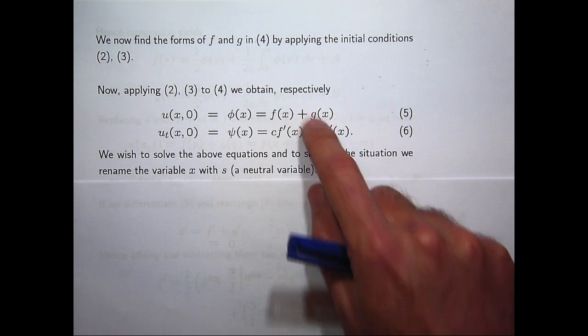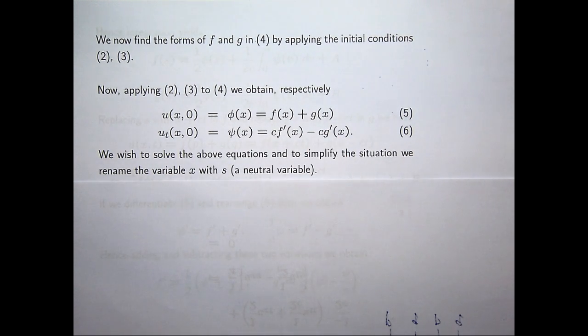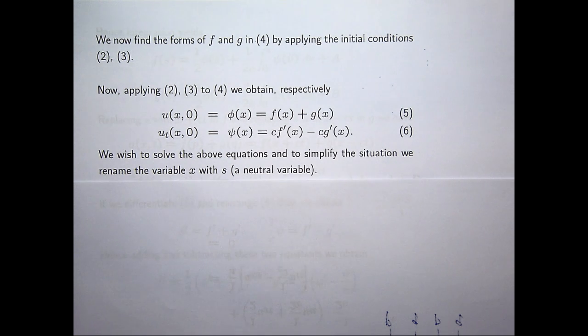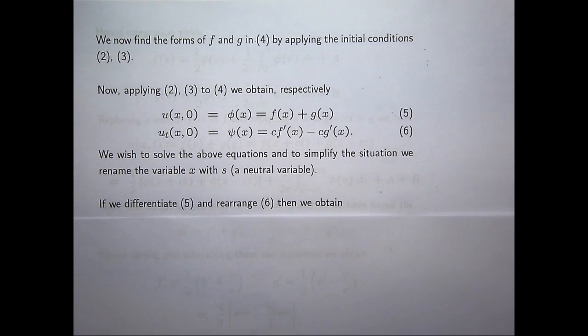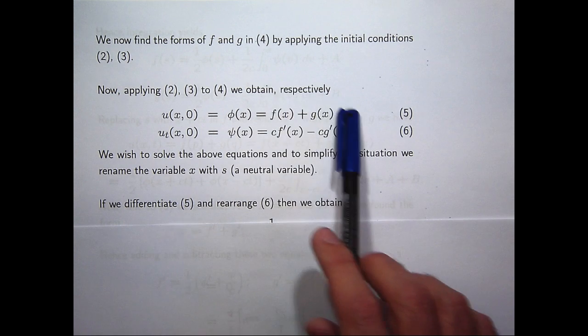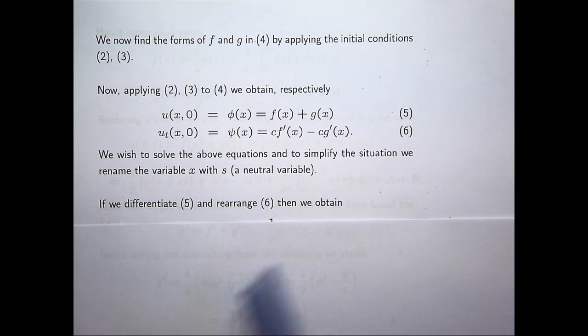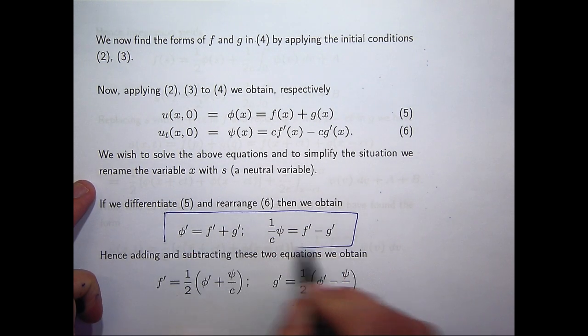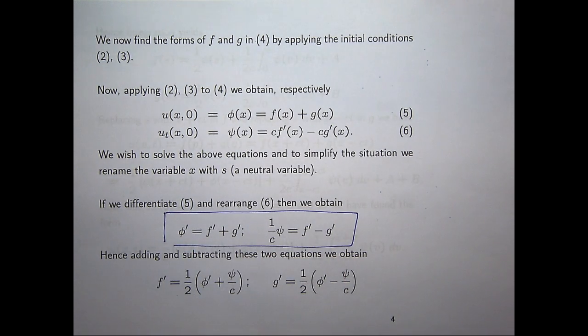So, what we would like to do is solve these equations. And to simplify the situation, we're just going to introduce some sort of neutral variable. So, let's just rename the variable x in here with s. It's just going to make things a little bit simpler. So, let's differentiate five and rearrange six and we come up with these sets of equations. Notice I haven't written any variables in there yet. I'm just leaving them unassigned for a second.